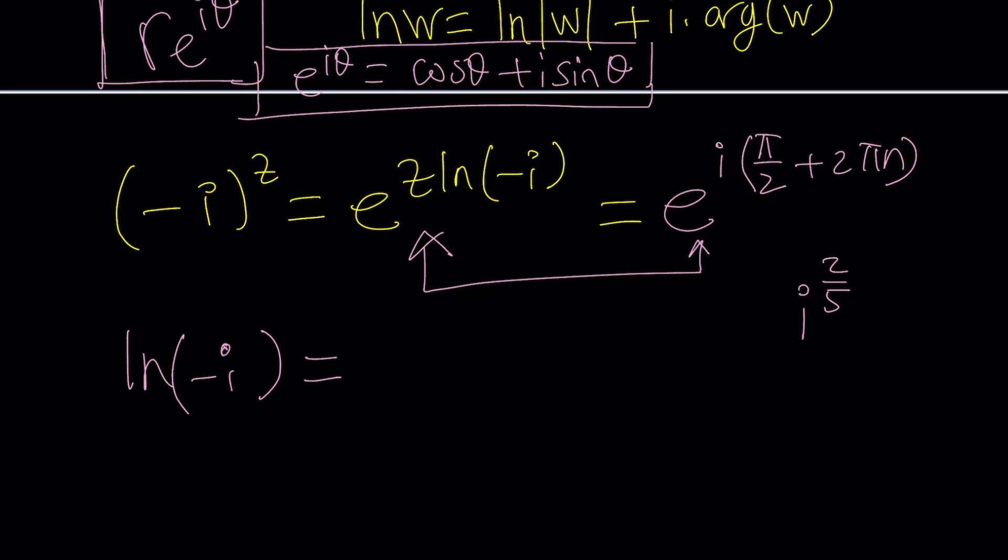So it's going to be ln of the absolute value of negative i, which is one. So it's going to be ln one, which is zero, and then plus i times, I'm going to use the principal argument for negative i, and that will be negative pi over two. Now, why don't I use three pi over two? Because I want to use something between negative pi and pi. And of course, one of them is not included. I think pi is not included. I probably, if I had to choose, I would choose the second one.